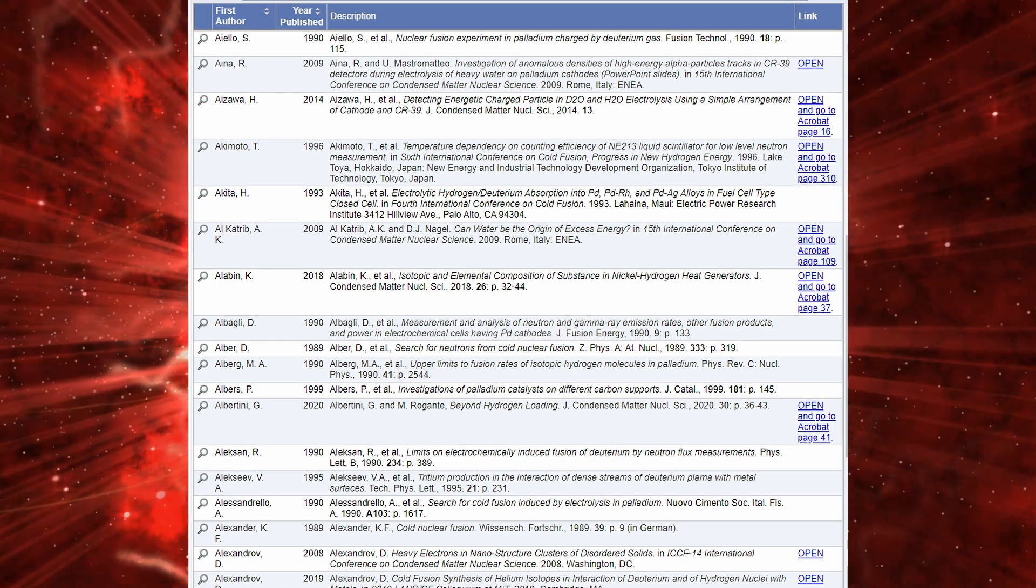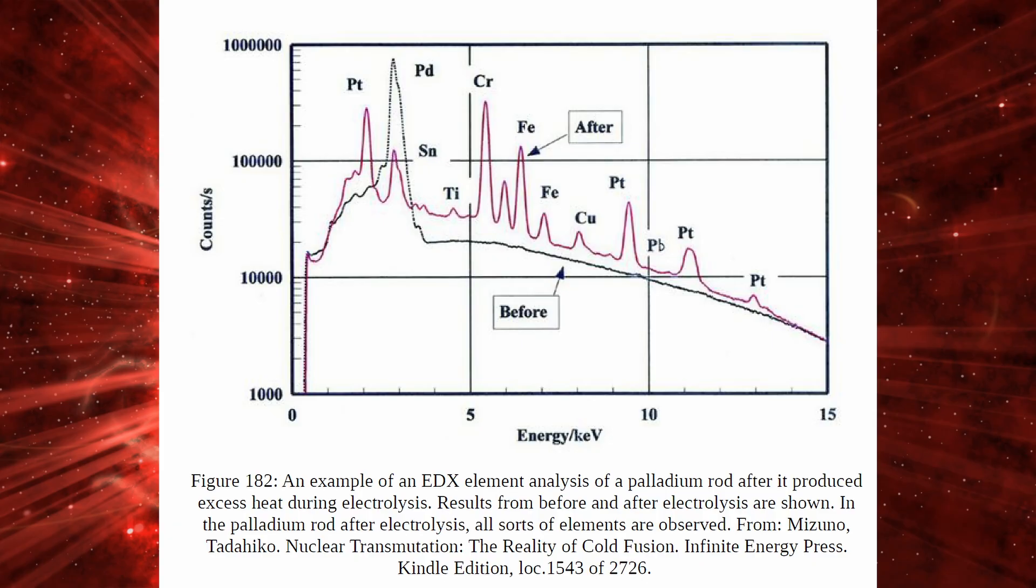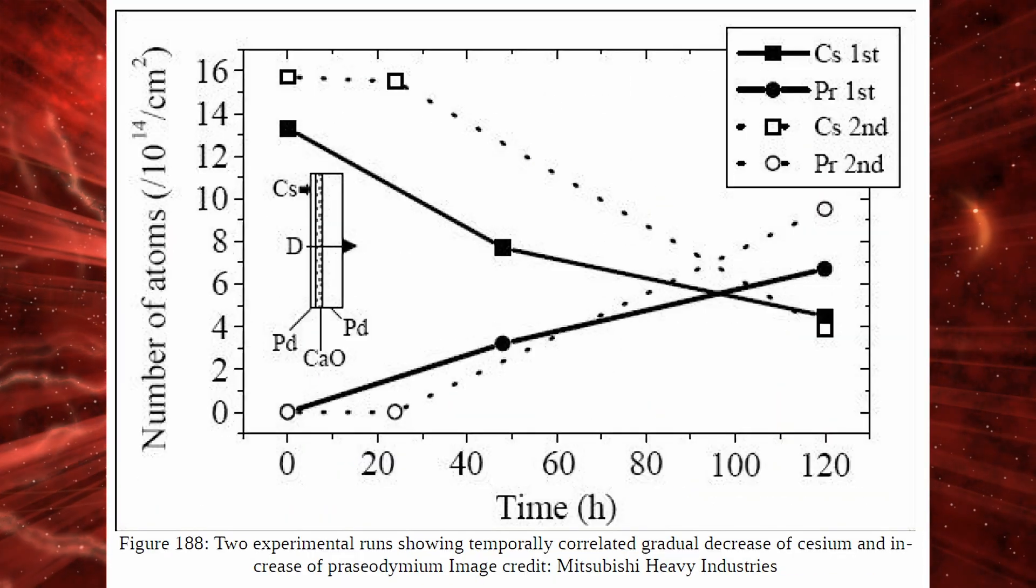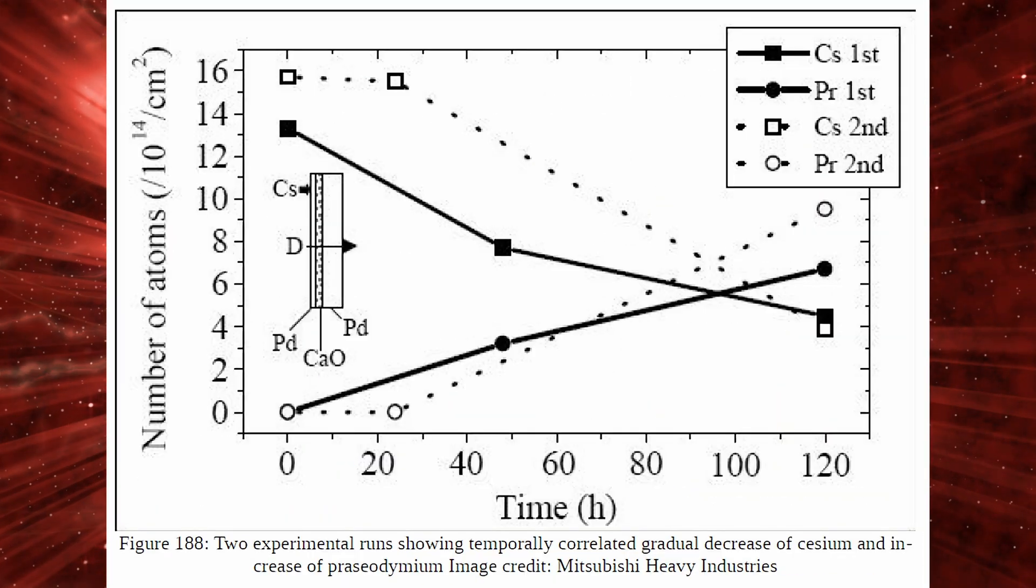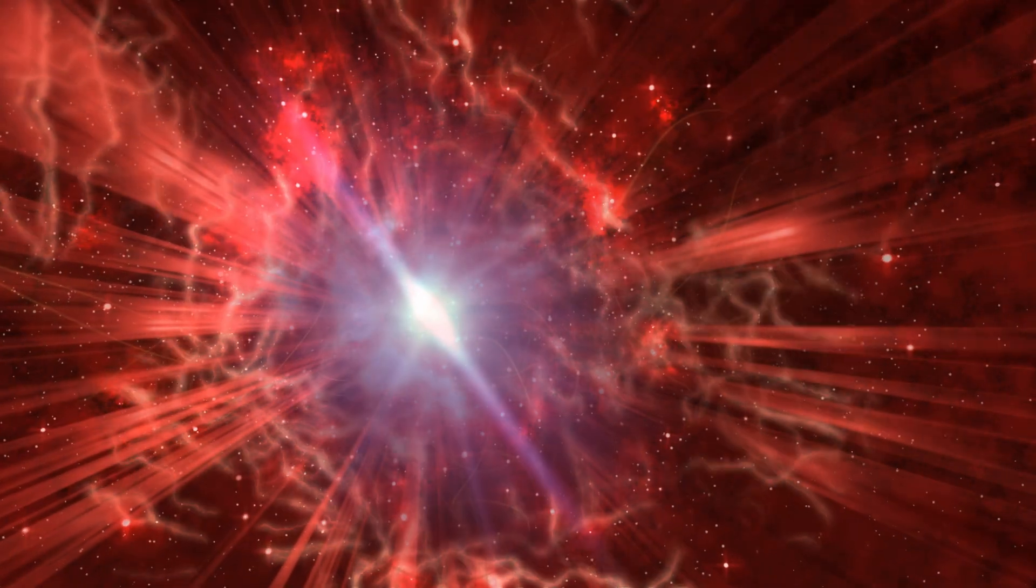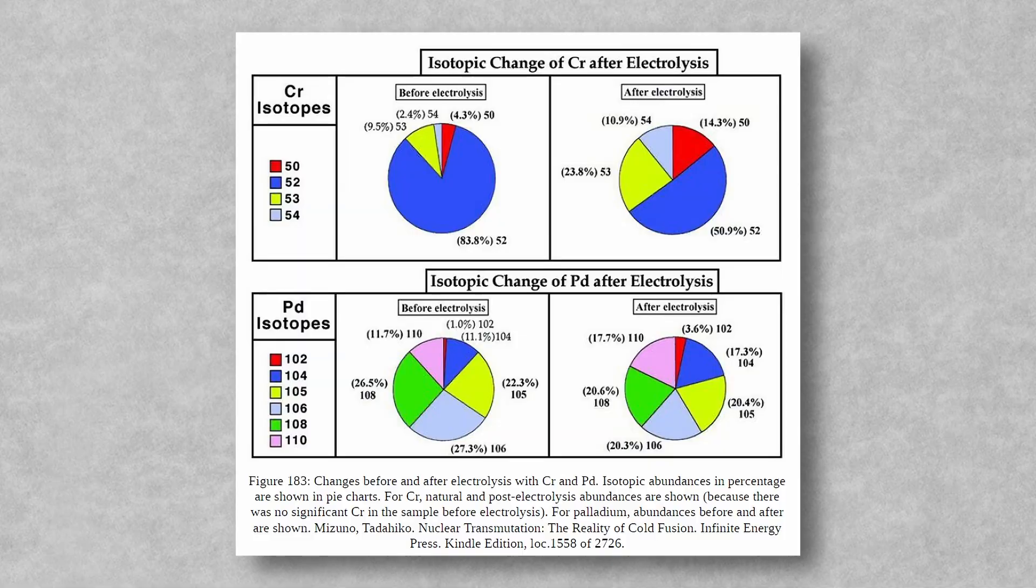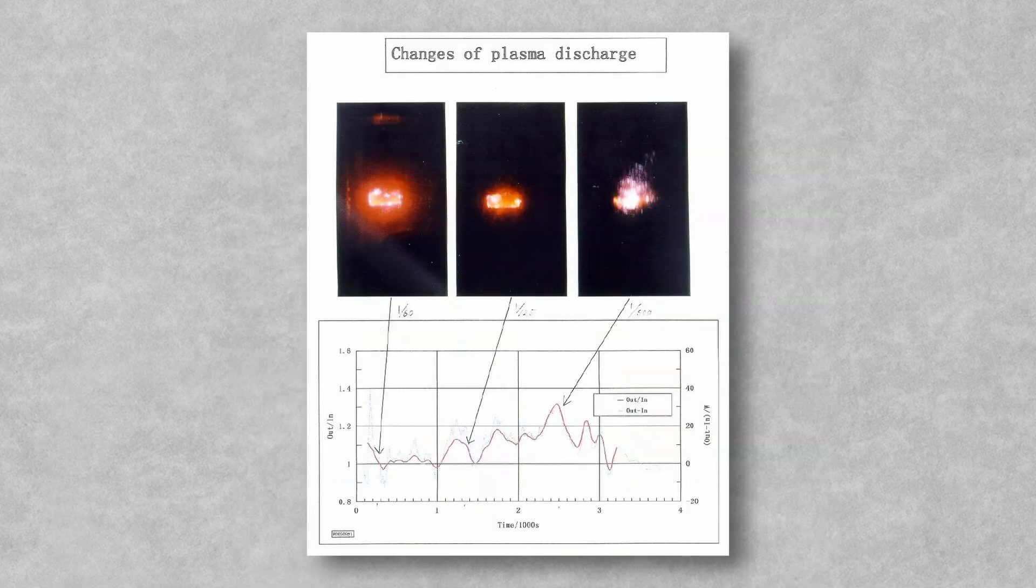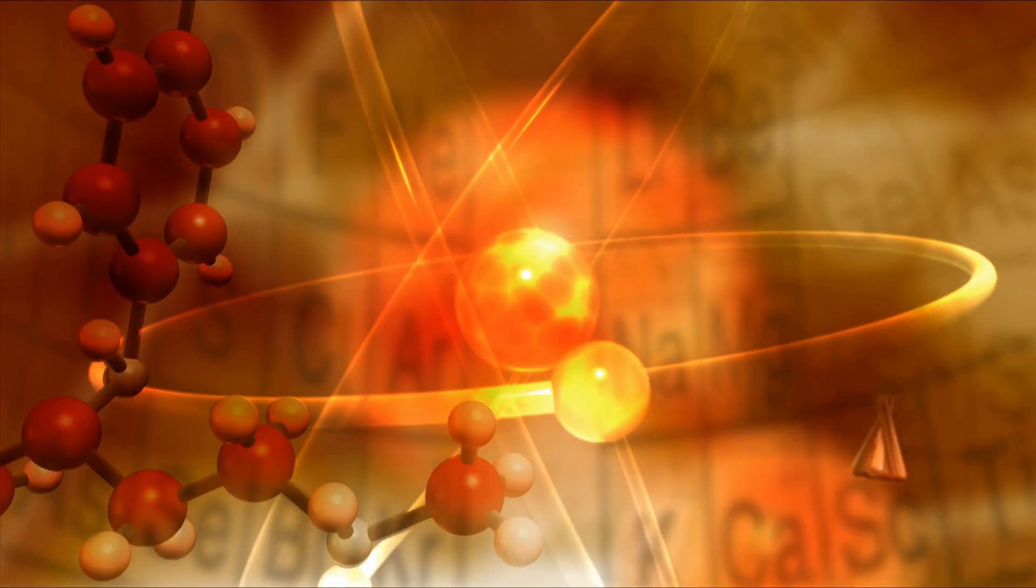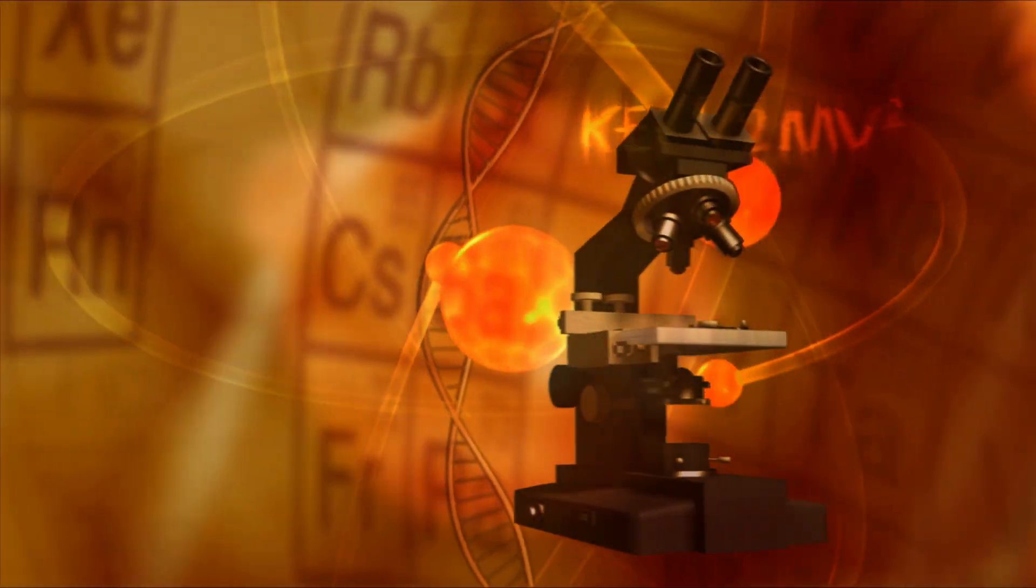Yet decades later, the phenomenon they described, known as low energy nuclear reactions, refuses to fade into obscurity. Hundreds of experiments continue to report anomalous results, suggesting something remarkable is happening, even if mainstream science struggles to explain it. What if LENR isn't just an anomaly, but a key to unlocking new nuclear processes?